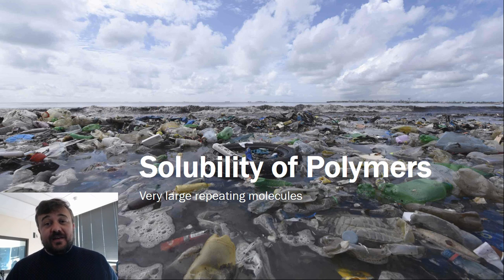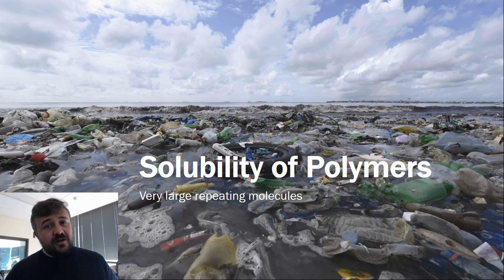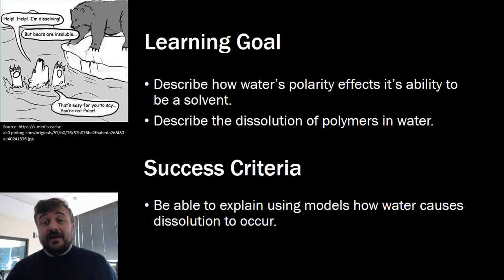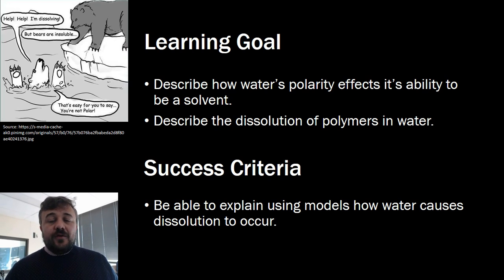Let's have a look at something really interesting: solubility of polymers. A polymer is a very large repeating molecule and they tend to be covalent molecules — not a covalent lattice network, but essentially a series of smaller molecules strung together. Our goal here is to talk about how polarity either affects or doesn't affect solubility for polymers.